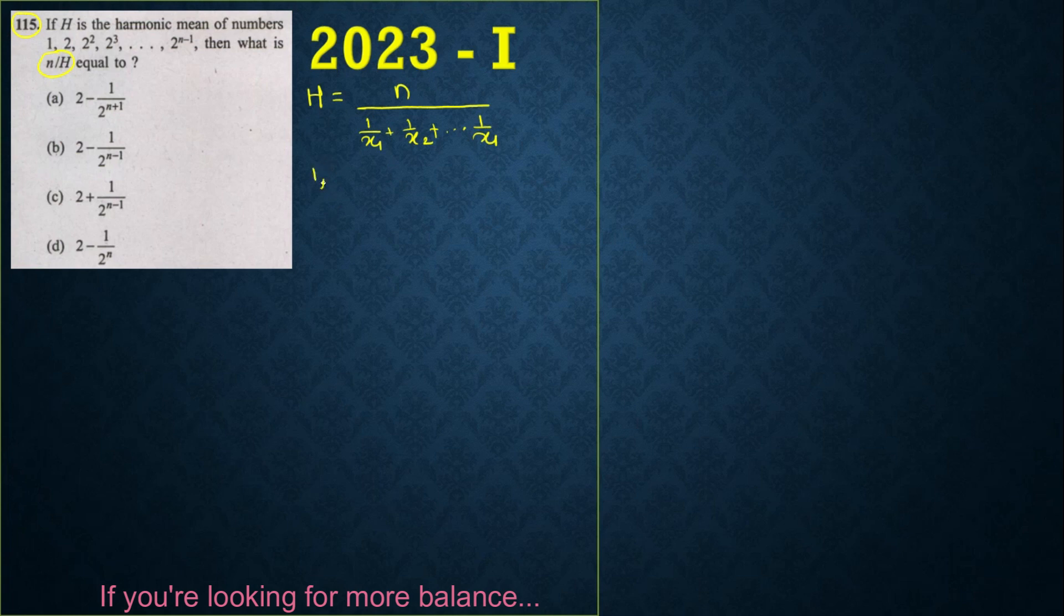They have given the numbers like 1, 2, 2 square, 2 cube, and so on till 2 raise to n minus 1. For the substitution method, I will be considering the first two numbers. You can cross verify the answer for any number of numbers.